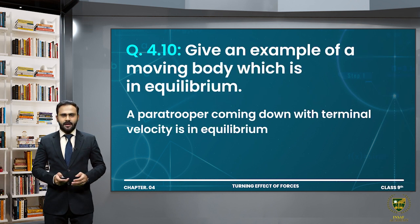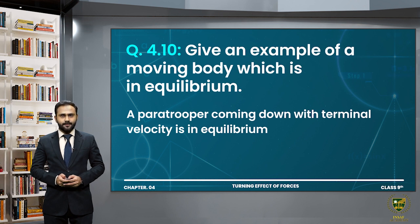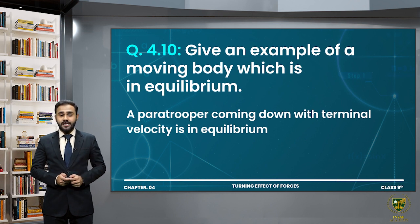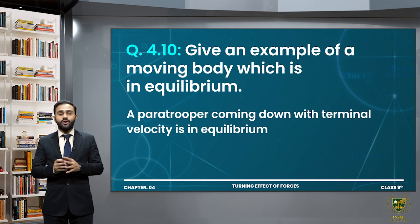Question 4.10: Give an example of a moving body which is in equilibrium. A paratrooper coming down with terminal velocity is in equilibrium, because the weight acting in the downward direction is equal to the force of friction acting in the upward direction — the air resistance provides an upward force. The paratrooper moves with uniform velocity, so the paratrooper is in equilibrium.